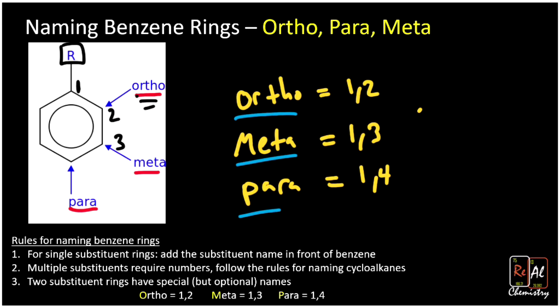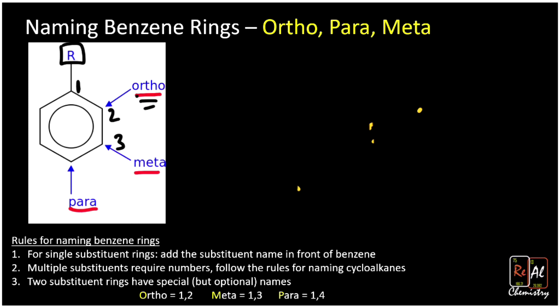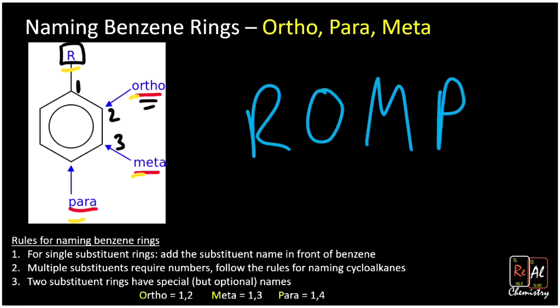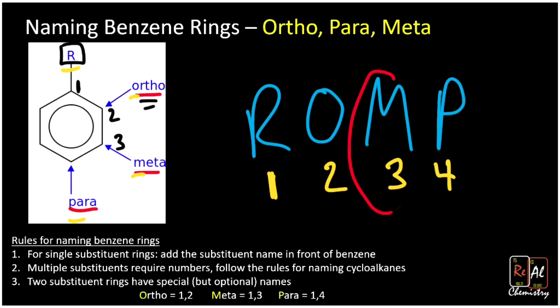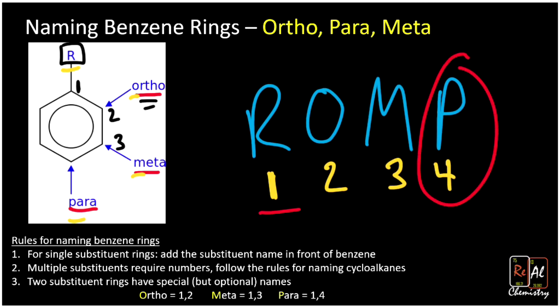You don't have to use ortho, meta, and para — you can use either the numbering or these terms — but because they show up so often, you need to know both ways of naming benzene rings. Here's a quick trick: starting with R, then O, M, P, we get the word ROMP. R is carbon one, O (ortho) is two, M (meta) is three, and P (para) is four.